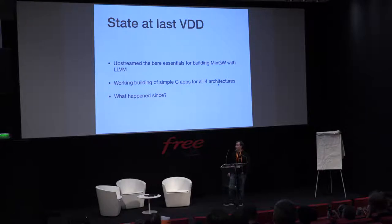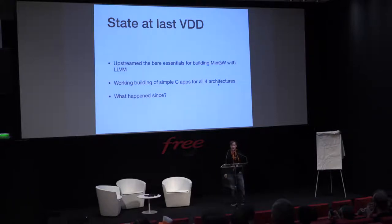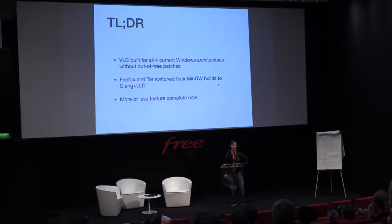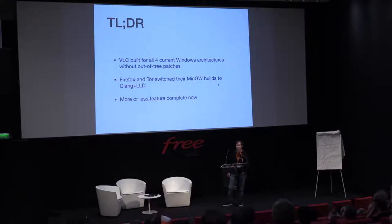So this was the state we were at last year at FOSDEM. We had the bare essentials upstream and had some basic C applications compiling. So what happened since? We now have VLC building for four architectures — i386, x86_64, ARM, and ARM64 — without any out-of-tree patches for anything in LLVM, MinGW, VLC, and so on. Everything straight out of the box.